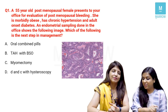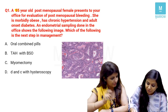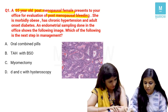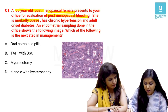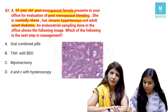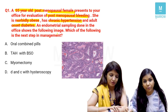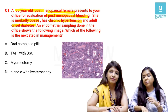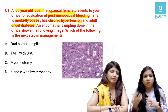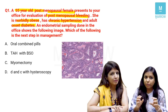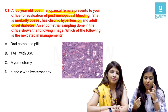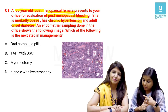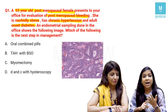Let's start with the first question. A 55-year-old post-menopausal female presents for evaluation of post-menopausal bleeding. She is morbidly obese, has chronic hypertension and adult-onset diabetes. An endometrial sampling shows the following image. Which of the following is the next step in management? The keywords here are: age, post-menopausal bleeding, obesity, hypertension, and diabetes.